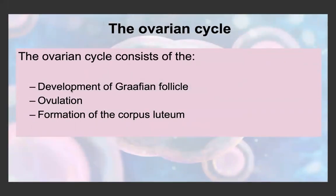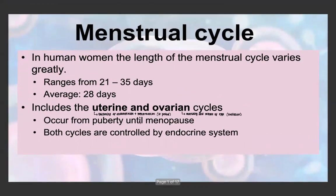The ovarian cycle consists of the development of the Graafian follicle, ovulation, and the formation of the corpus luteum. One thing to keep in mind is that people often think one cycle takes place in the first half and the other in the second half — that's incorrect. The uterine and ovarian cycles both take place simultaneously throughout the menstrual cycle. The ovarian cycle focuses on changes in the ovary, and the uterine cycle focuses on changes to the uterus.